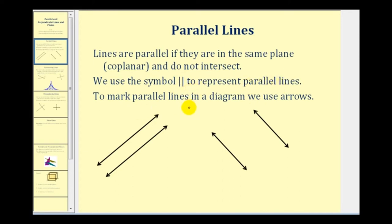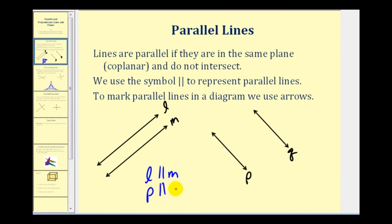To mark parallel lines in a diagram we use arrows. If we call this line L and this line M, this line P and this line Q, we can say that line L is parallel to line M and line P is parallel to line Q. Using arrows, we put one arrow on line L and one arrow on line M to show those are parallel, and two arrows on line P and two arrows on line Q to show those two lines are parallel. Notice that line L and line P have a different number of arrows, which indicates they are not parallel.